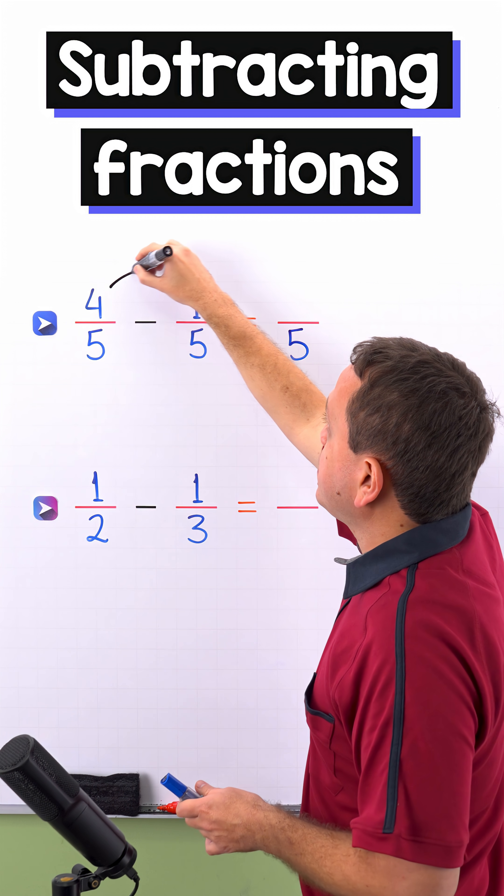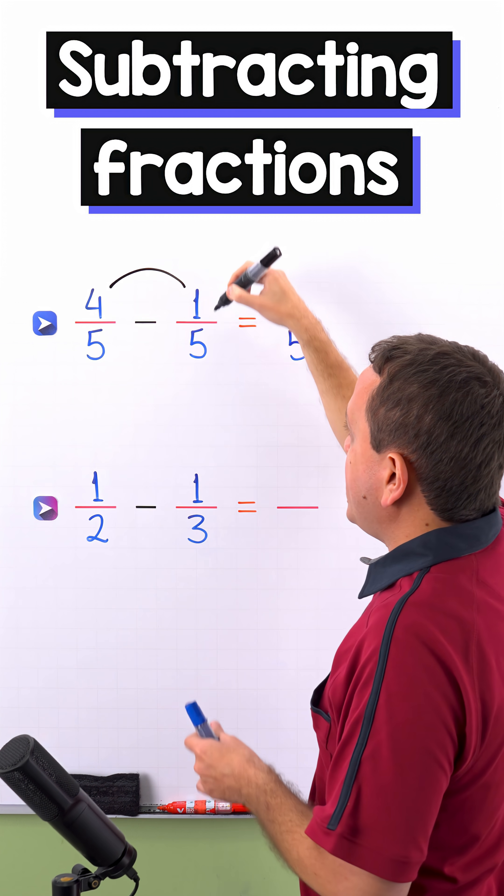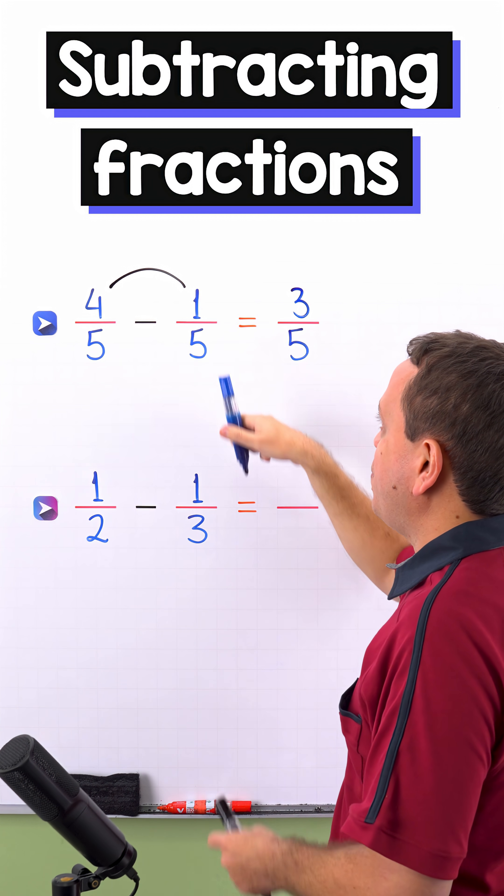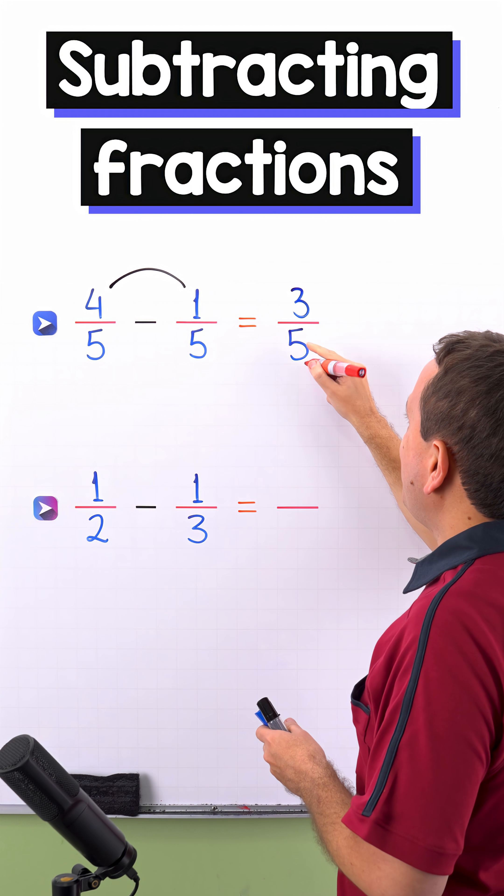And finally, we just need to subtract the numerators and 4 minus 1 gives us 3. Therefore, 4 fifths minus 1 fifth gives us 3 fifths.